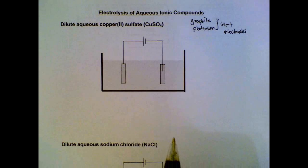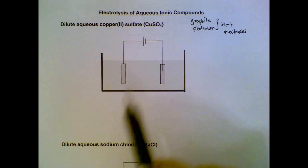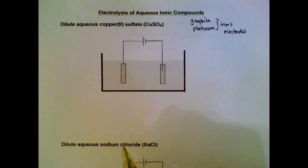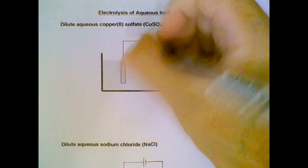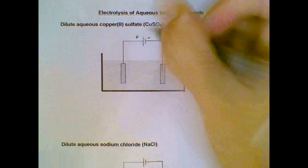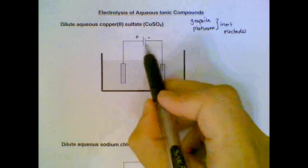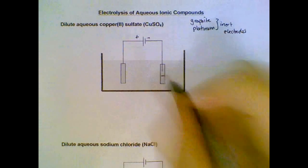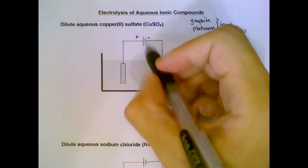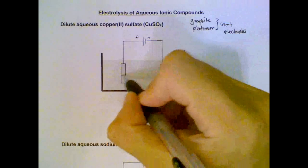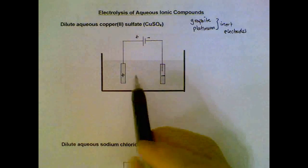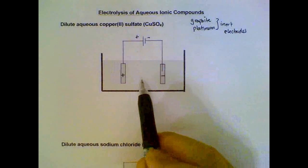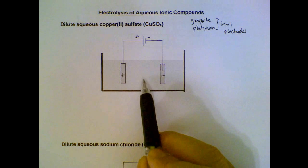We will again assign the terminals of the battery and the electrodes first. The negative end of the battery is connected to the negative electrode, and the positive end is connected to the positive electrode. If you want a detailed discussion on how we assign the electrodes and the terminals, you can refer to an earlier video.